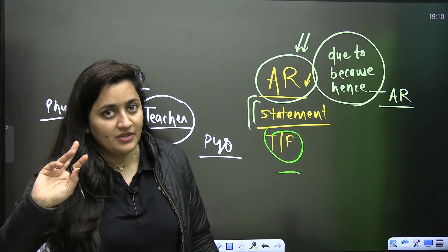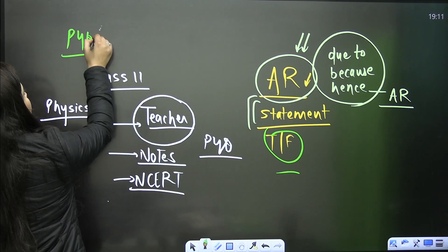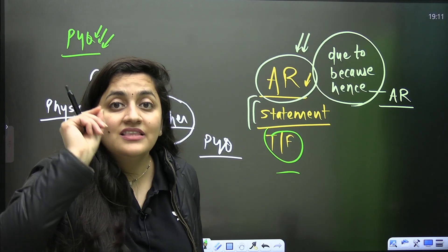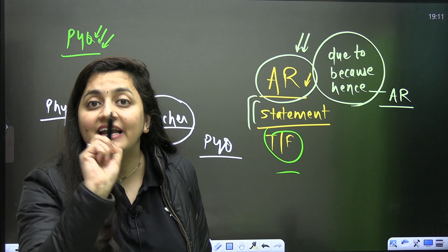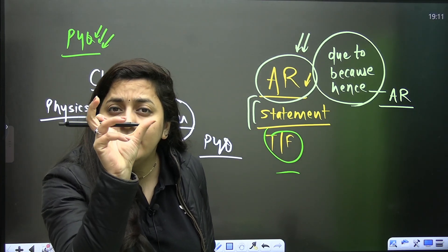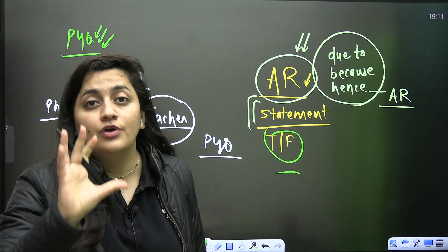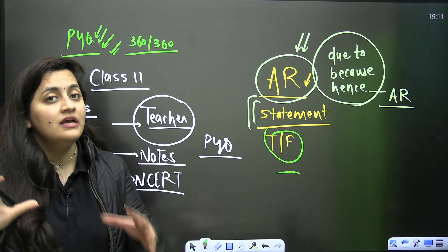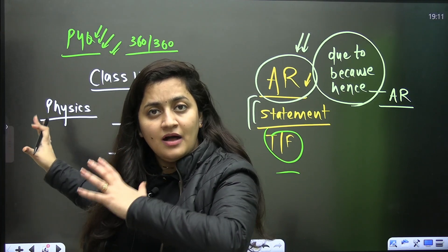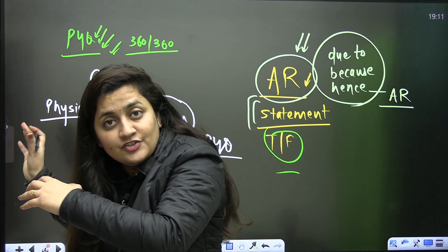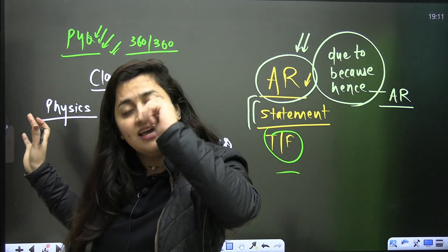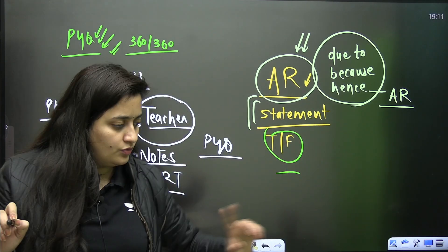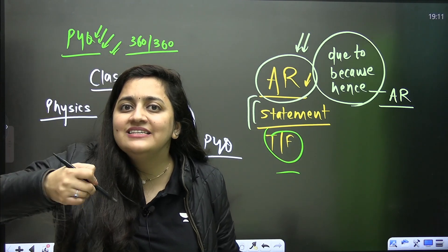Analyze the previous year papers and focus on PYQs. Make sure that in your NCERT — in all chapters, even in the theory part and summary part — you have highlighted all the lines from where they have asked questions. For scoring 360 out of 360 in biology, such practices are very very important. Even your NEET 2024 paper — maximum questions are simply the previous year questions. So if in your NCERT you know 'this line PYQ, this line PYQ,' while revising you just need to pay attention to those important points.